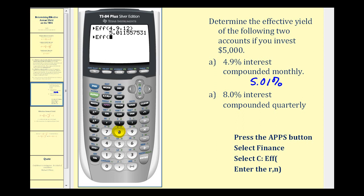Interest rate is 8%. Comma, this account is compounded quarterly, and there are four quarters in one year. So N is four. Close parenthesis. Press enter. Our effective annual yield is approximately 8.24%.